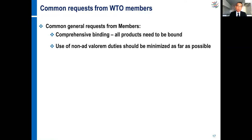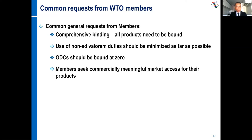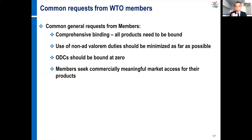An acceding member would be asked to reduce the use of or eliminate non-ad valorem duties — it is more transparent to have ad valorem duties. Other duties and charges should be bound at zero. Members seek commercially meaningful market access for their products. WTO members want to see whether, with the commitment, they would have better market access. They tend to have special attention to tariff peaks — you may have 7,000 tariff lines where 6,800 have a duty between 0 and 5%, but for a few products you can have very high duties: 20%, 30%, 50%, and we know of one country with a bound commitment of 3,000%.